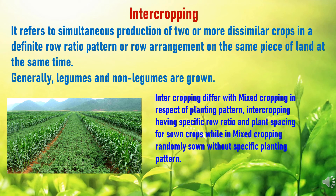Now, briefly about intercropping. Intercropping is also a type of multiple cropping but differs slightly. Intercropping refers to the simultaneous production of two or more dissimilar crops in a definite row ratio pattern or specific row arrangement on the same piece of land at the same time, and typically involves a combination of legume and non-legume crops. The key difference from mixed cropping is the planting pattern: in intercropping, a specific row ratio and plant spacing are maintained, whereas in mixed cropping, crops are sown randomly with no specific row arrangement or plant spacing.